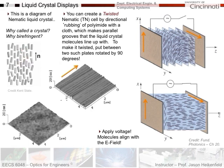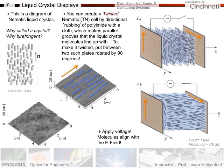The liquid crystal is placed between two special plates coated with polyimide polymer. A cloth is literally rubbed across the surface multiple times, creating microscopic grooves in the polyimide at the micrometer scale. When the liquid crystal is placed against the plate, the molecules line up with these grooves due to interaction forces. One plate is rubbed vertically and the other horizontally, so the molecules rotate gradually from one orientation to the other through the thickness of the cell.